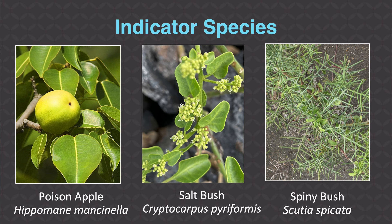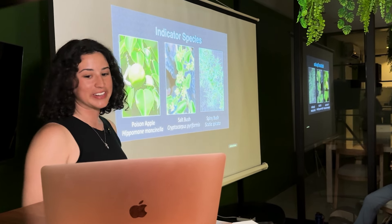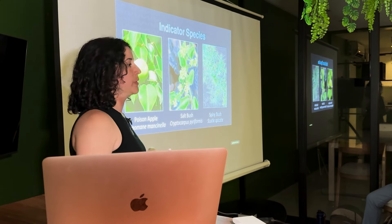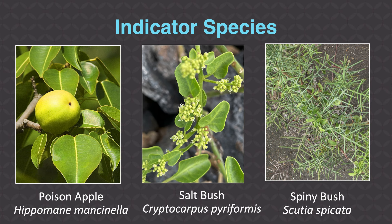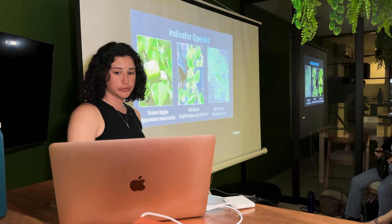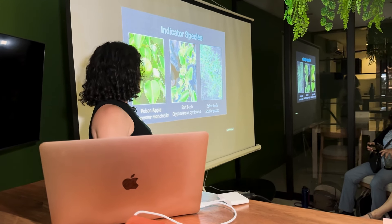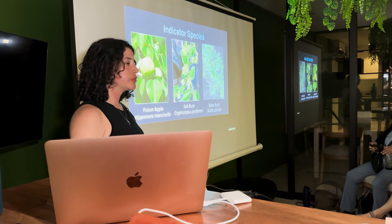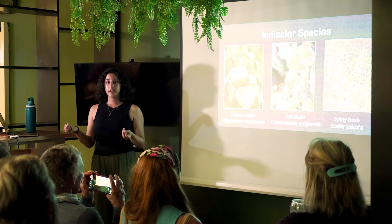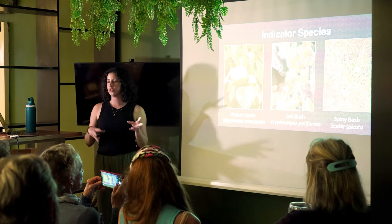Indicator species include Hippomane mancinella — the poison apple — named because the fruit is toxic, so don't eat it. The scientific name mancinella references the Spanish word for apple, manzanilla. Next is the saltbush, Cryptocarpus pyriformis, named because it is very tolerant of salt. Then Scutia spicata — the spiny bush — whose fruit is food for many finches, iguanas, and other native animals. Plants develop spines to either defend themselves or conserve water; the Scutia spicata likely develops spines to conserve water in this high-heat, low-precipitation area.